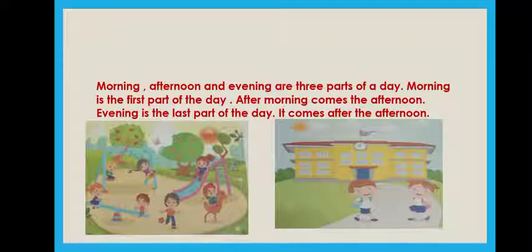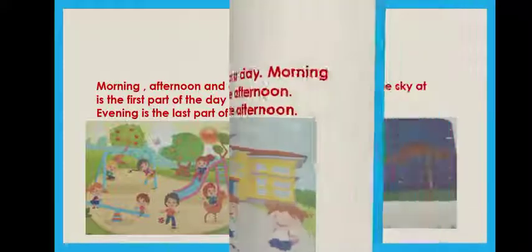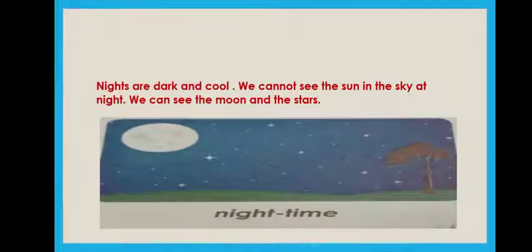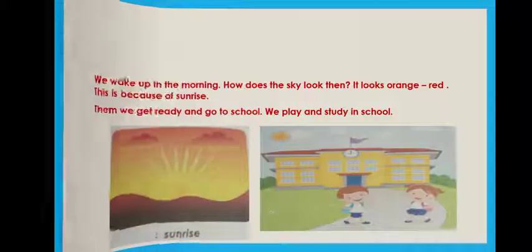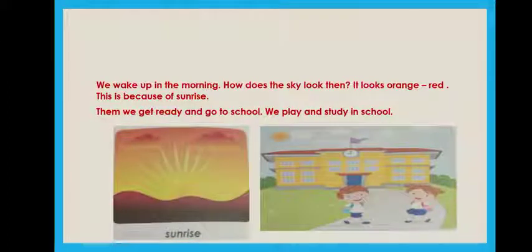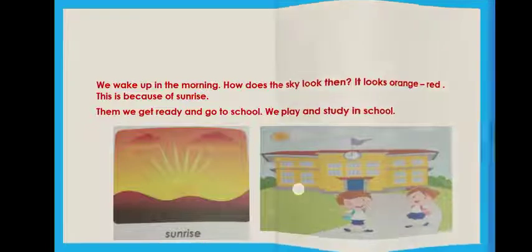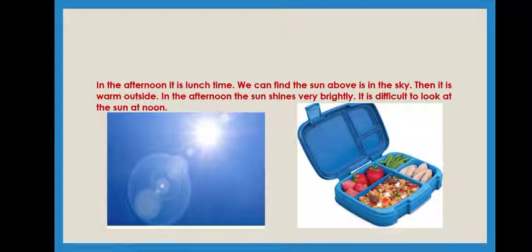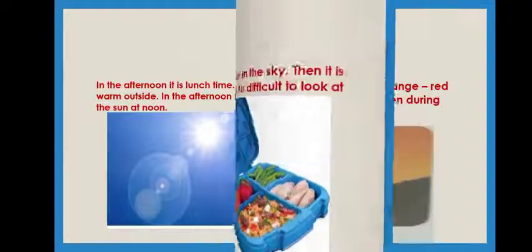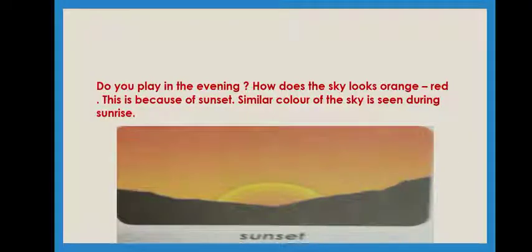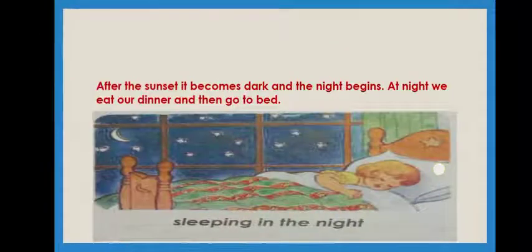There are three parts — morning, afternoon, and evening, isn't it? And what is night. We also learnt about sunrise, that is morning, what we do in the afternoon, what we do in the evening — all those things we learnt, isn't it, and what we do at night.